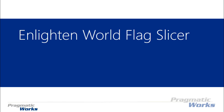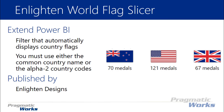Welcome back to the Power BI Custom Visuals course. In this module we're going to be looking at the Enlightened World Flag Slicer. The World Flag Slicer, as you might guess by the name, is a filter that will automatically take in country names or codes and convert those into a flag. So if you have a country name or a two-character alpha country code, it will convert that into a flag. That way, whenever you want to filter something, you can select a flag instead of the text for United States, United Kingdom, or Australia.